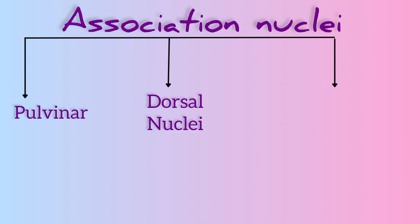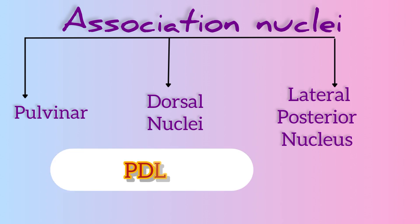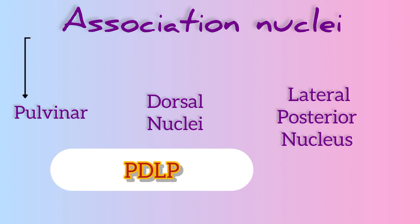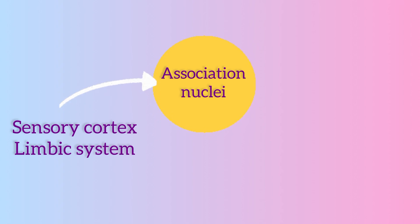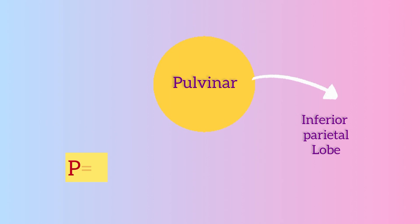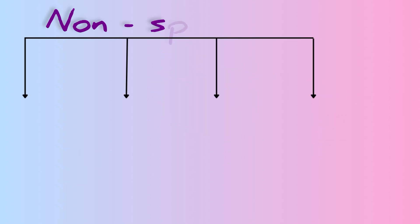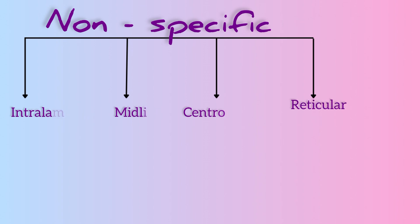The association nuclei consist of the pulvinar, dorsal nuclei, and lateral posterior nucleus — remembered as PDLP. These nuclei receive inputs from the sensory cortex and limbic system and project to the association cortex or subcortical structures. The pulvinar specifically projects to the inferior parietal lobe — pulvinar P, parietal P.